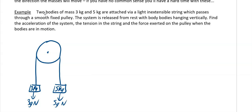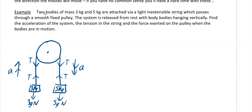There's tension in the string. First we have to think about which way it will go — it's clearly going to accelerate downwards on the five kilogram side and upwards on the three kilogram side. What's moving the three kilograms up is the tension in the string. There's also tension in the string upwards on the five kilogram side, trying to slow it down. There are also tensions going downwards, and all these tensions balance each other out.